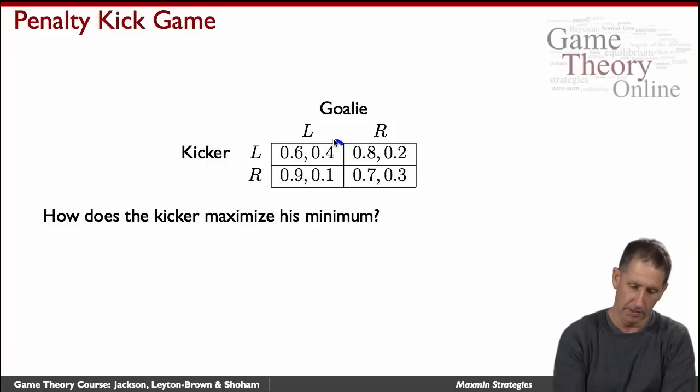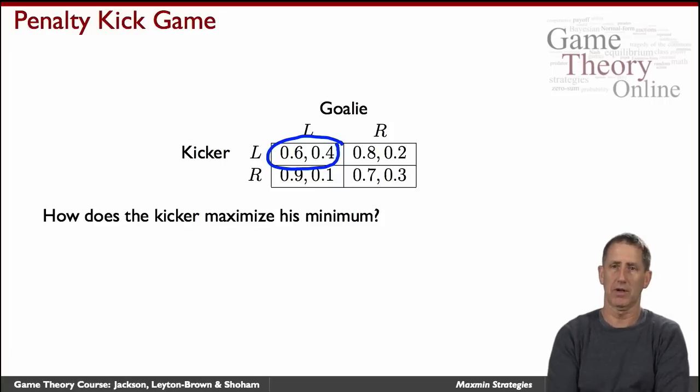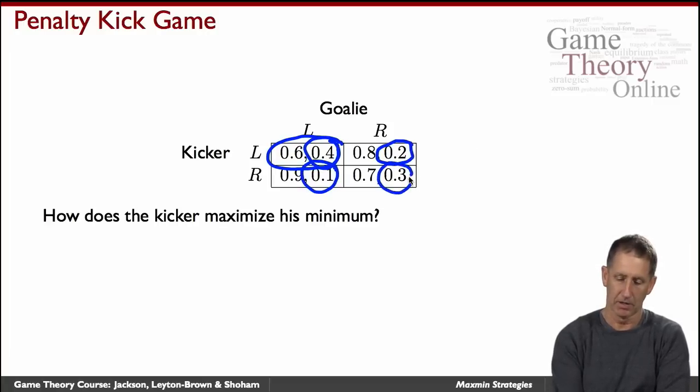And so here they are. So for example, if the kicker kicks left and the goalie guesses correctly and jumps left also, then the goalie has not too bad a chance of stopping the shot, namely probability 0.4. If he jumps to the wrong side, his probability of stopping it is much lower, 0.2. Similarly, if the kicker decides to kick to the right, if the goalie guesses wrong, his probability is low, even lower than if he guessed wrong in the other case. And if he guesses right, his probability is higher, although not quite as high as had he guessed right in the left case. So he's better at stopping shots when the kicker kicks to the left.